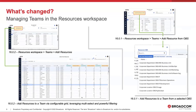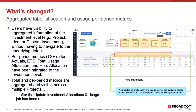We changed the model in 16.0.2 — it's far more flexible. You basically have an add resources function that brings you to a grid. You're now in the resource grid looking for resources, and you have far more configurability and flexibility to look by certain types, certain expertise, certainly by OBS — but there's a lot more flexibility to select and identify resources and include them on the team.